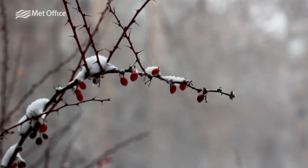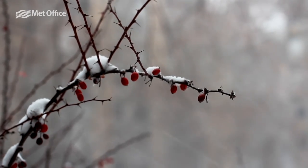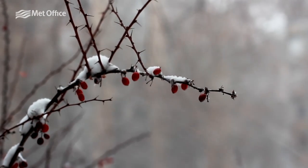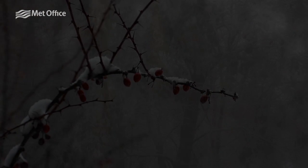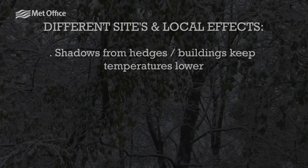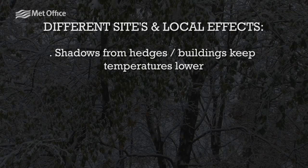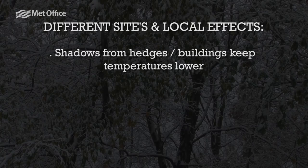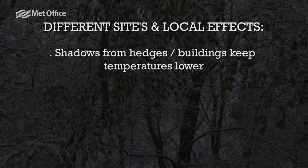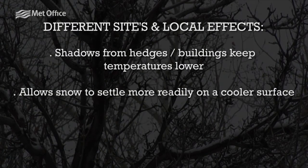Some of the lesser and not immediately obvious variables can also have significant effects. Shadows during the day from hedges or buildings will keep temperatures lower throughout the day, allowing them to fall even lower overnight as nighttime cooling occurs. This allows snow to settle much more readily on the cooler surface.